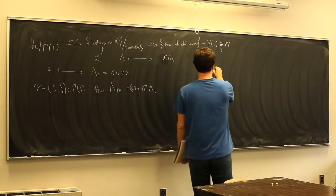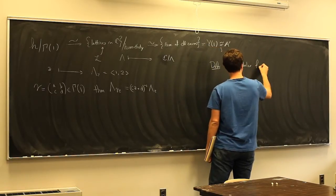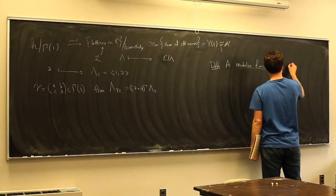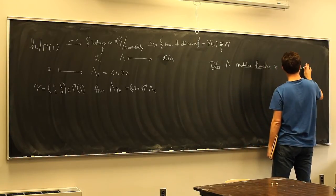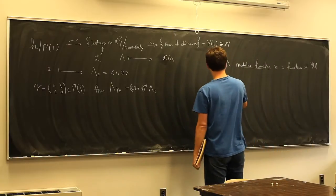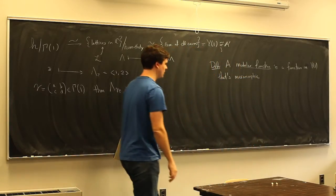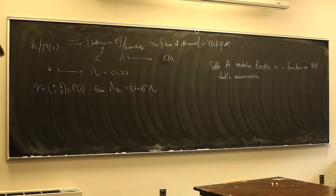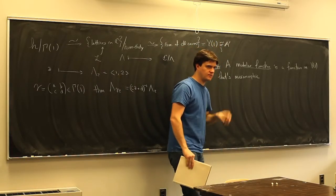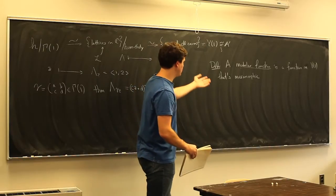A modular function is a function on the modular space Y₁ that is meromorphic everywhere, including at infinity — at the missing cusp point, it should be meromorphic. The J-invariant is an example: it's meromorphic everywhere except at the cusp at infinity, where it has a simple pole. Since Y₁ (or X₁) looks like ℙ¹, its field of functions is generated by J, so all modular functions are rational functions in J.